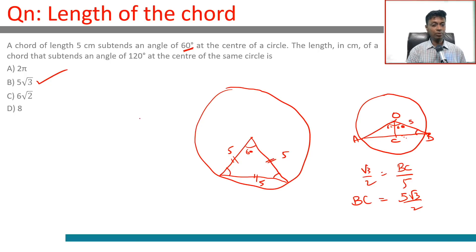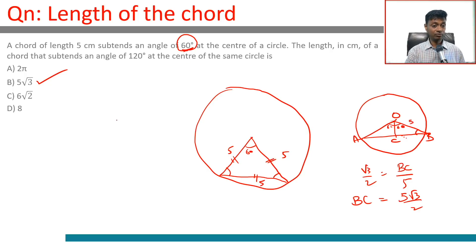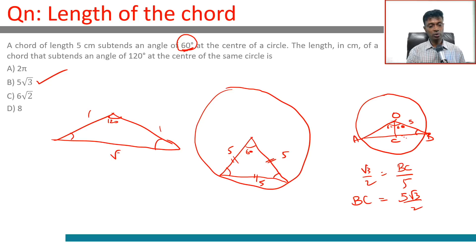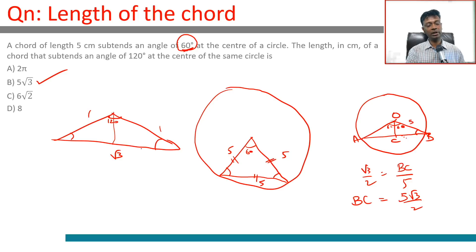It really helps to know that the moment you have a 60-degree angle at the center, you're talking about an equilateral triangle, so the radius is 5. In a 120-30-30 triangle, the sides are in the ratio 1 : 1 : √3. It helps to know that, but it's not required — you can just do the trigonometry and get to the answer.